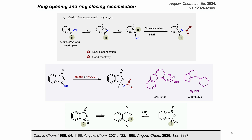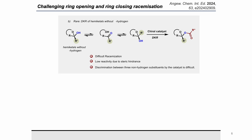In trisubstituted systems, the fourth substituent is hydrogen. These systems are easy to racemize because of low steric hindrance, and they are also well reactive towards acylation. For systems lacking hydrogen as the fourth substituent — such as fully substituted alkyl or aryl carbons — racemization via the ring-opening and ring-closing mechanism is difficult, and the reactivity of such alcohols is sluggish during the resolution reaction.